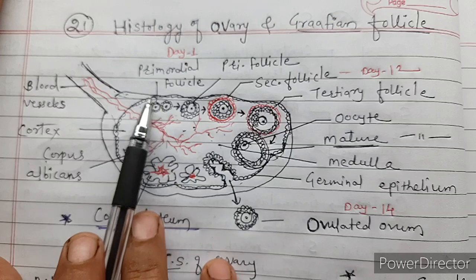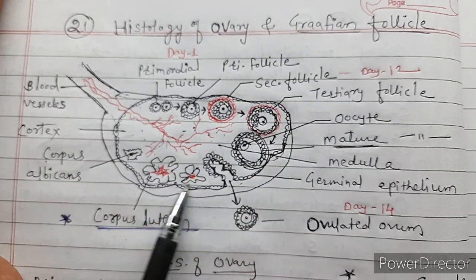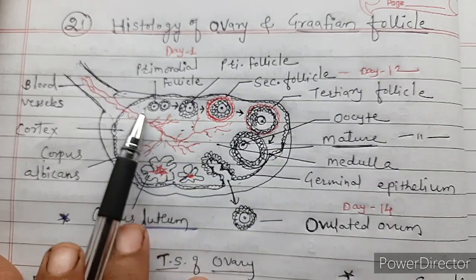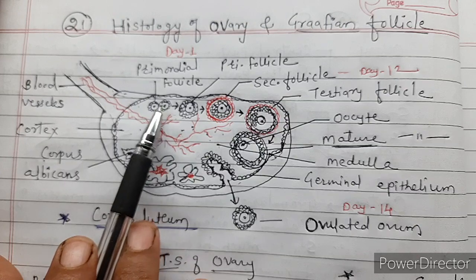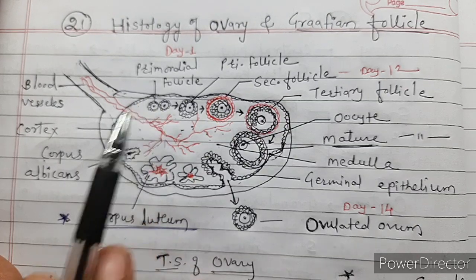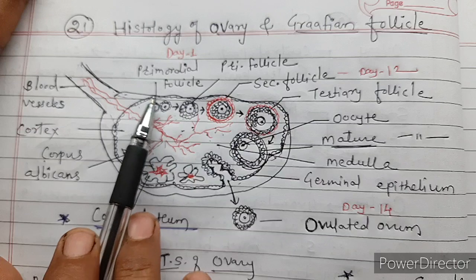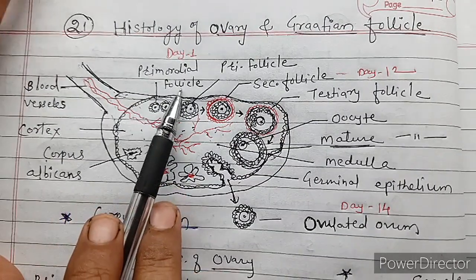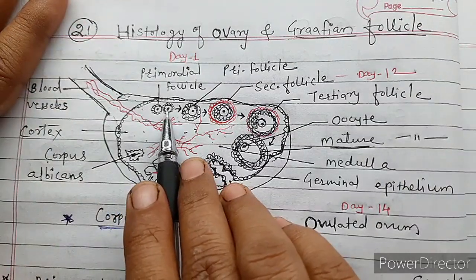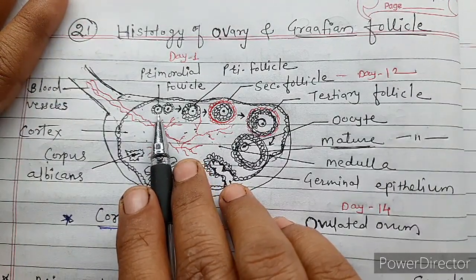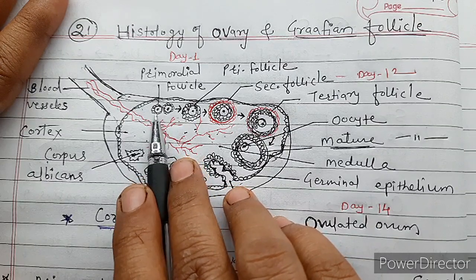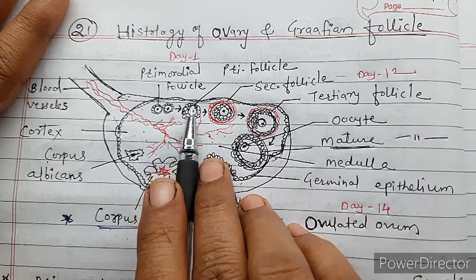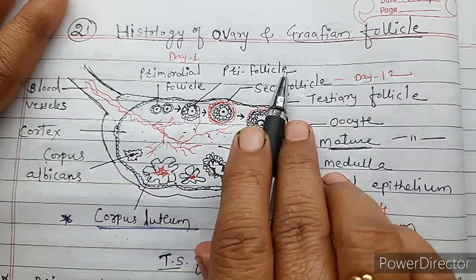The ovary is lined by germinal epithelium. I had told you that the process of oogenesis actually starts before the birth of the female baby. From the germinal epithelium, the primordial follicles develop. These primordial follicles have a single layer of follicular cells — they are single layered. These primordial follicles develop into primary follicles.